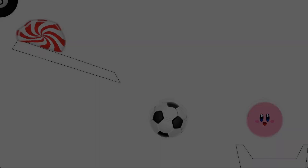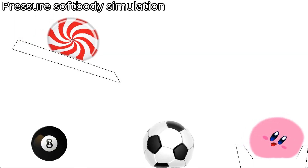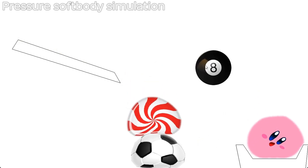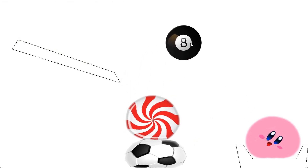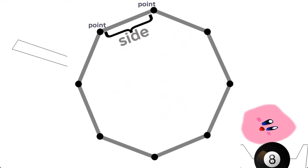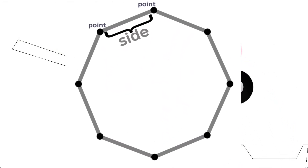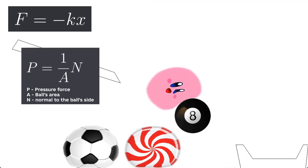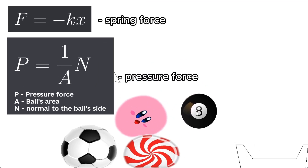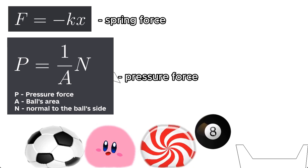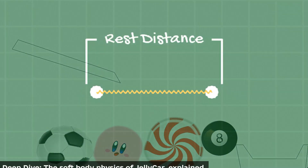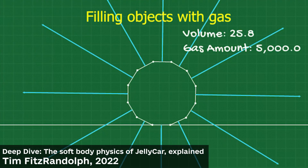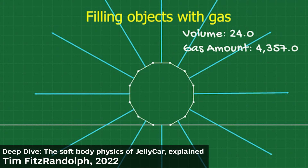The first project of the year is a pressure soft body simulation. It was nice to think of a ball as a set of points joined between each other. Here are some formulas for the calculations. I'm using a spring force to keep ball sides apart and pressure to inflate the ball.